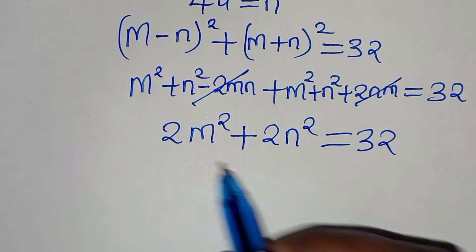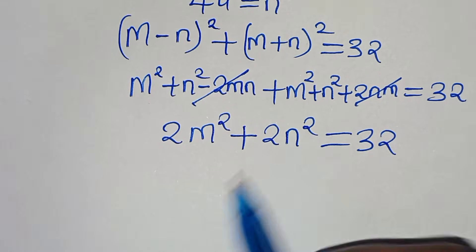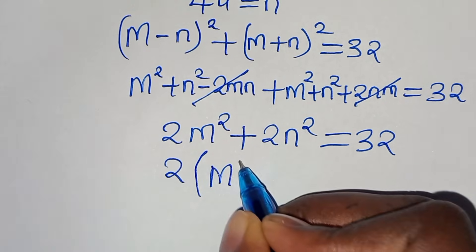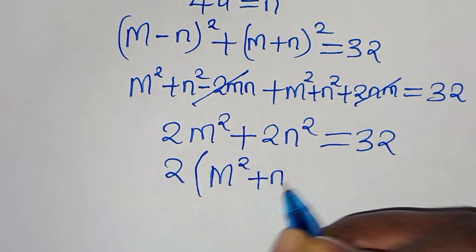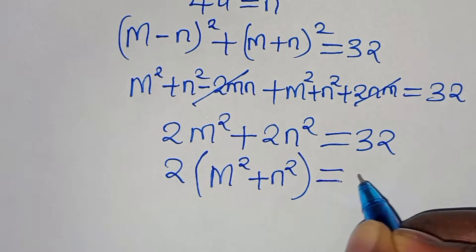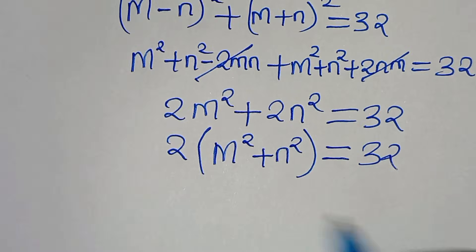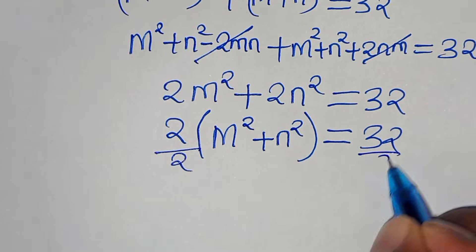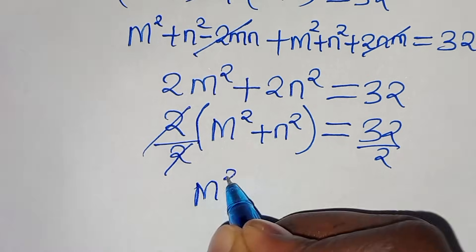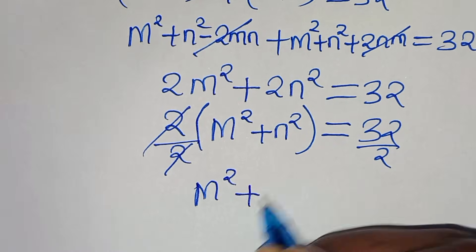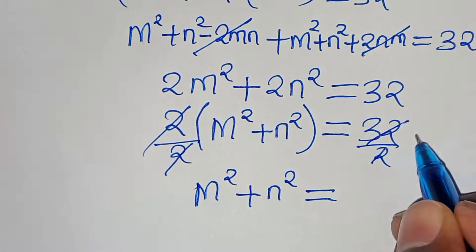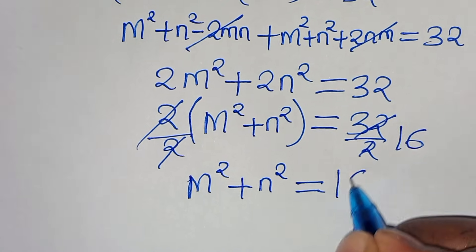Since 2 is common, we factor it out to get 2 times, in parentheses, m squared plus n squared, equal to 32. Dividing both sides by 2, we have m squared plus n squared equal to 16.